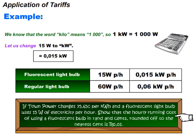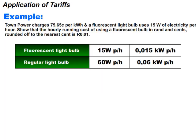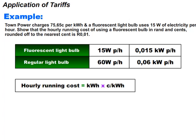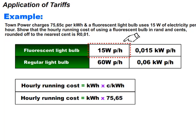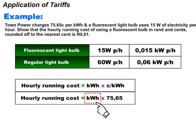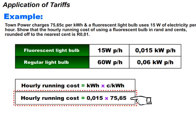Show that the hourly running cost of using a fluorescent bulb, in rands and cents rounded off to the nearest cent, is one cent. Let us write down the formula for calculating the hourly running cost. The charge is 75.65 cents per kilowatt hour. The fluorescent light bulb uses 15 watts per hour, which is the same as 0.015 kilowatt. So the hourly running cost is equal to 0.015 multiplied by 75.65.